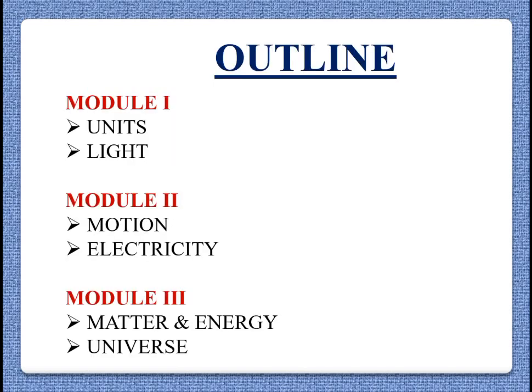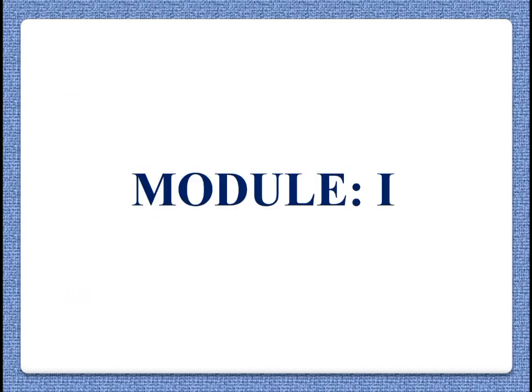The outline of this course includes three modules with two units each. Module 1 consists of units on light; Module 2 covers motion and electricity; and finally Module 3 covers matter, energy, and the universe.